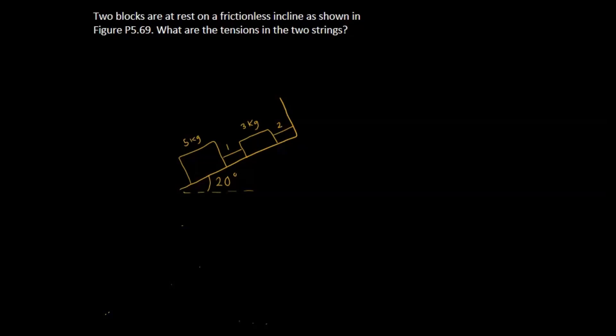Hey everyone, so today we're going to be looking at this one problem. It states that two blocks are at rest on a frictionless incline as shown in the figure below. What are the tensions in the two strings?